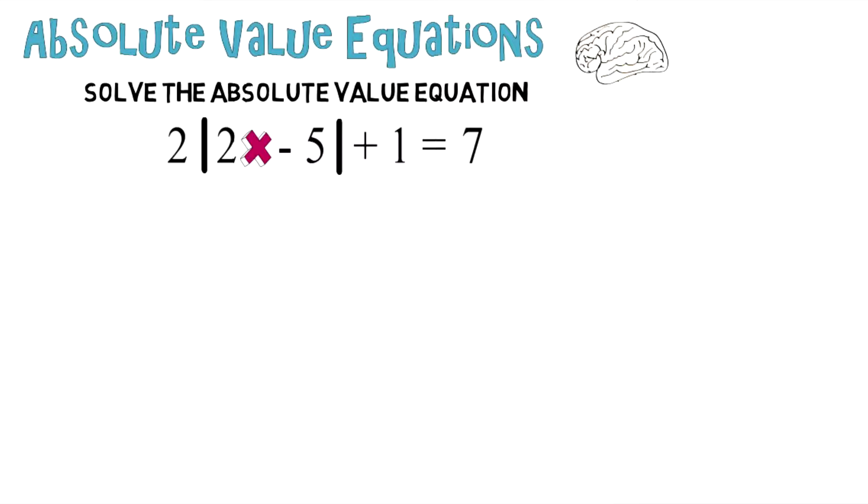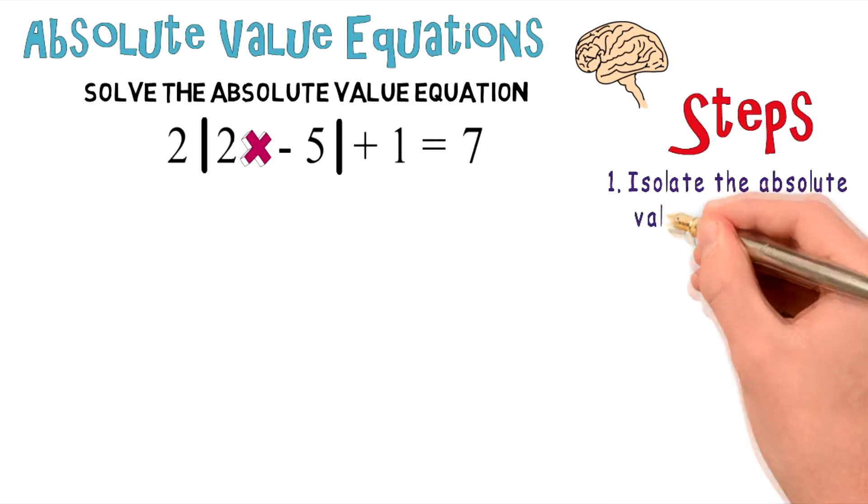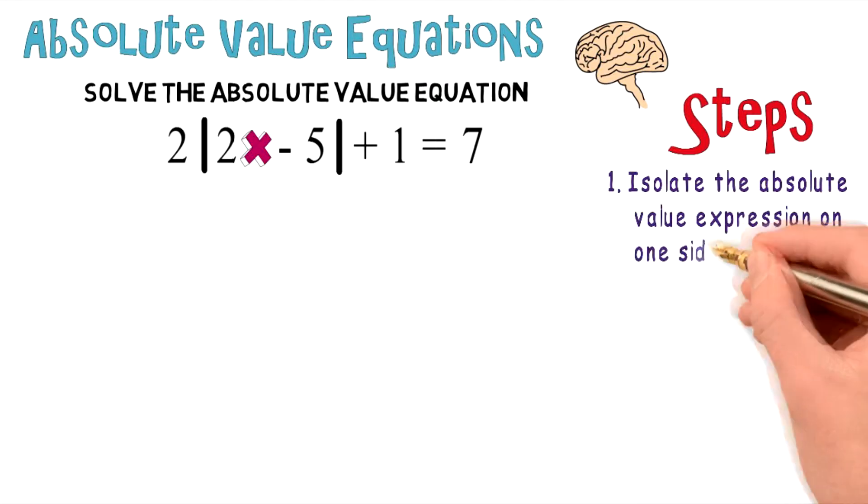Now, I want you to take a second and think about this problem, think about how you would solve it. And if you get stuck on this problem, here are a couple steps. So let's look at the first step. The first thing you want to do is isolate the absolute value expression on one side of the equation.